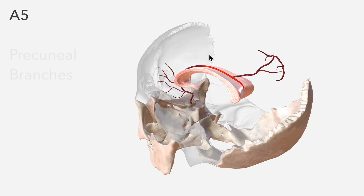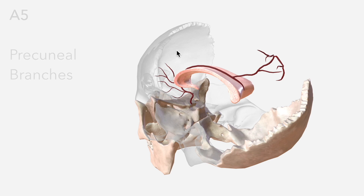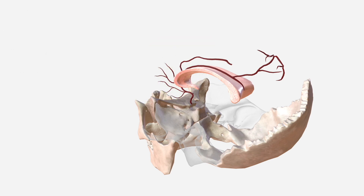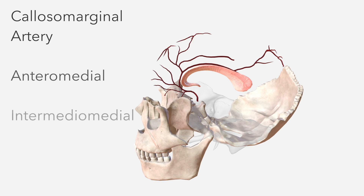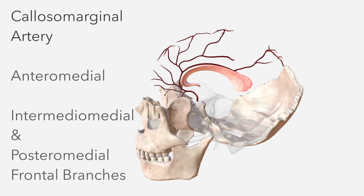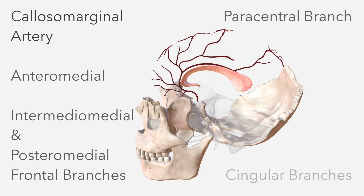From the A5 segment we have the precuneal branches. Let's remove the frontal bone again to bring in our next significant branch of the ACA, which is the callosomarginal artery. It departs from the A3 segment to run in the cingulate sulcus and throws off a number of branches: an anteromedial frontal branch, an intermediomedial frontal branch, a posteromedial frontal branch, as well as paracentral branches and cingular branches.